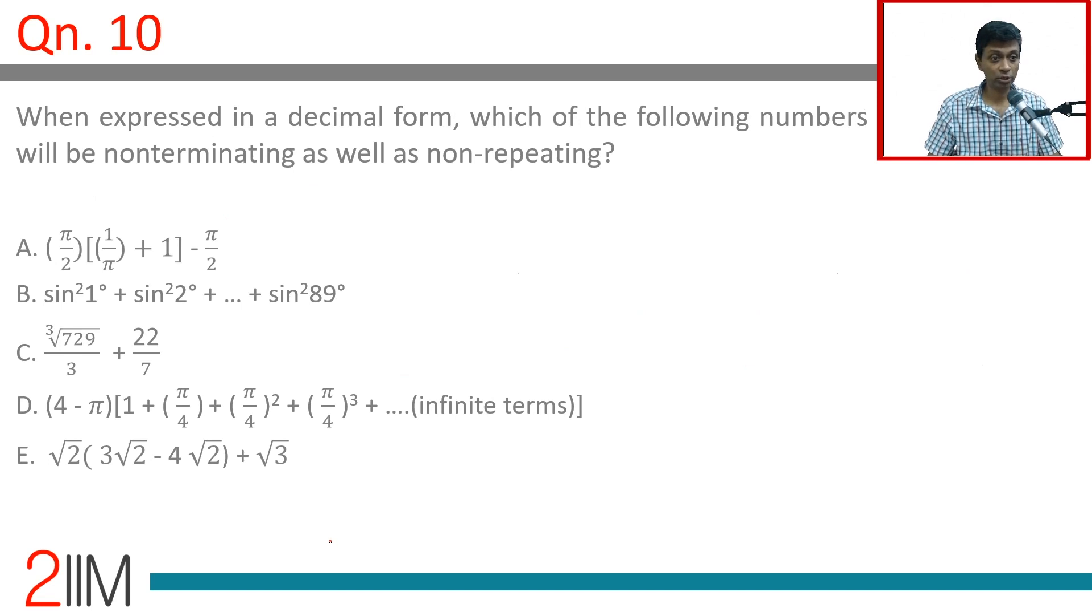The next question: When expressed in decimal form, which of the following numbers will be non-terminating as well as non-repeating? In other words, which of the following is irrational?